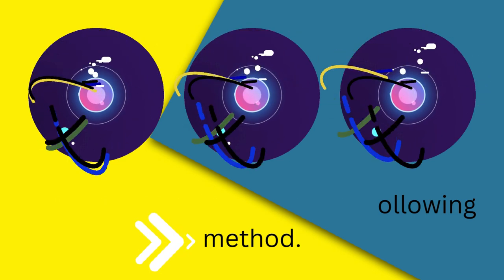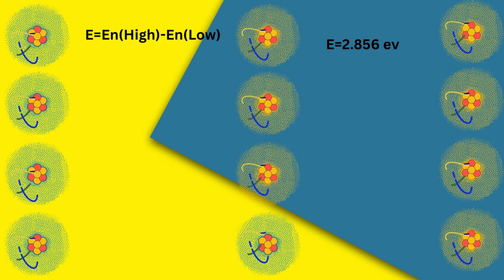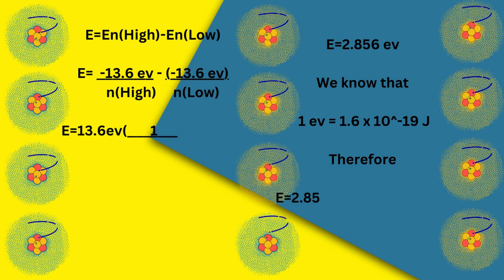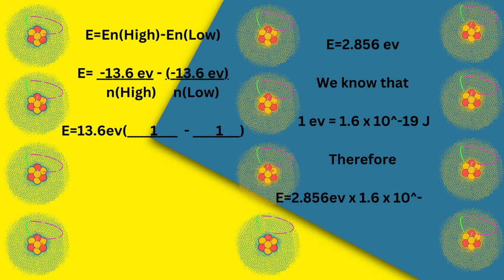Another method: E = En(high) - En(low). Given n(high)=5 and n(low)=2, E = 13.6 eV × (1/2² - 1/5²) = 2.856 eV.